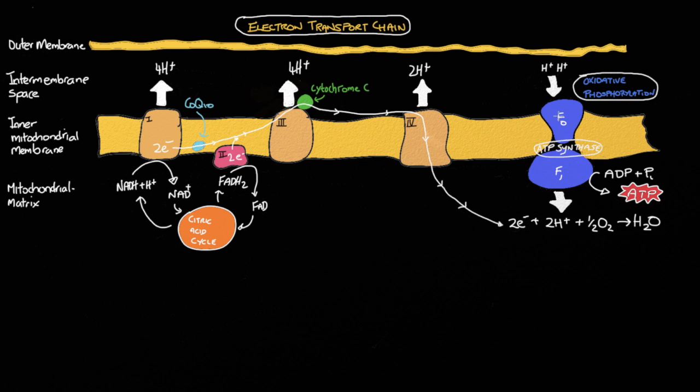You will note that ATP synthase has two main units. The FO complex, which basically acts as a shaft connecting the intermembrane space with the mitochondrial matrix. In addition, we have the F1 complex, which acts as a turbine that spins at a rapid rate, fusing ADP with phosphate to create ATP.